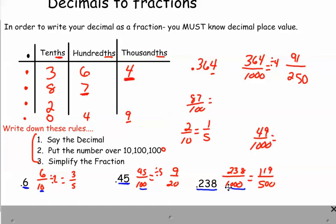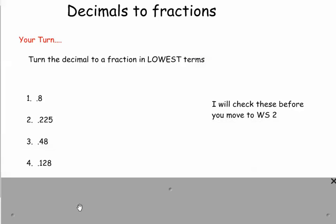Okay. All right. So here is your problems now. You've got four problems to work on. This is your exit slip. Make sure they are in lowest terms. Lowest terms. I need to check these before you move on to worksheet two.